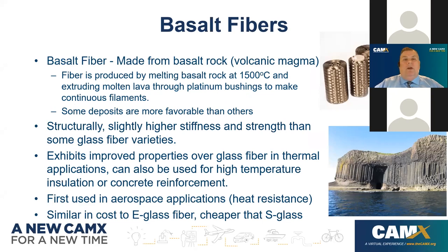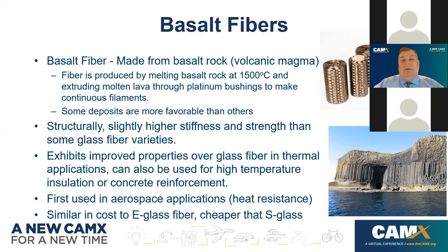Basalt fibers are made from volcanic magma, produced similarly to glass fiber by melting basalt rock at 1,500°C and extruding it through platinum bushings to make thin, continuous filaments. Some deposits are more favorable than others, so the source of supply matters. Compared to glass, basalt is slightly stiffer and stronger but very similar overall. It exhibits excellent thermal properties and was first used in aerospace for heat resistance. It is similar in cost to E-glass and cheaper than S-glass.